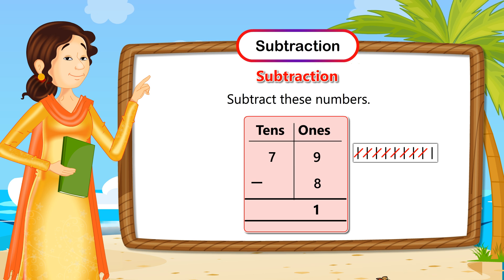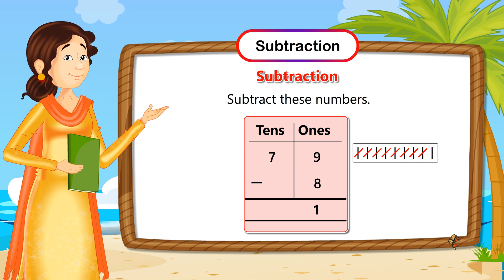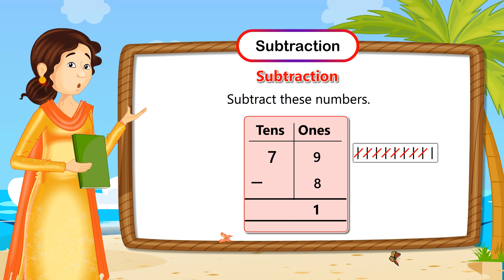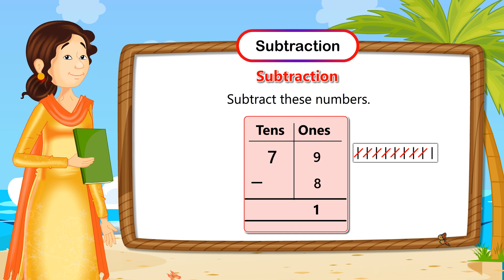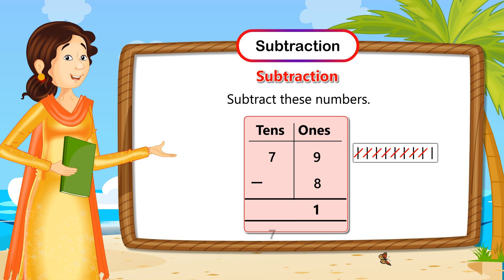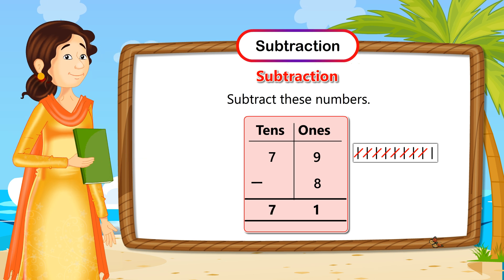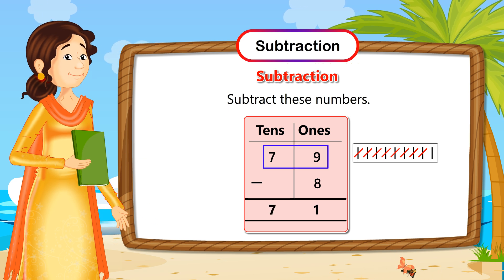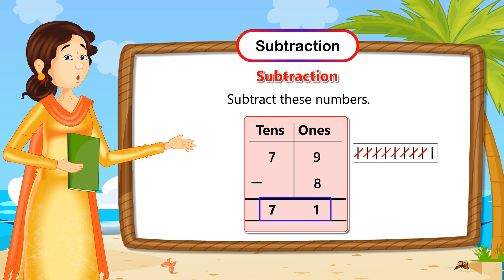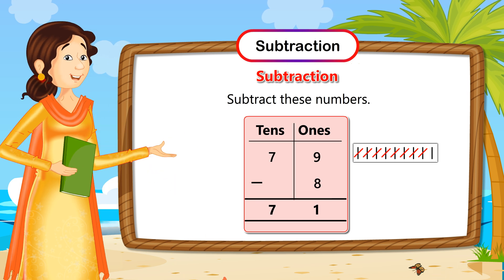Now let's move to the 10s column. In this column we have only 1 digit, so we will write it as it is in the 10s column. So 79 - 8 is 71.